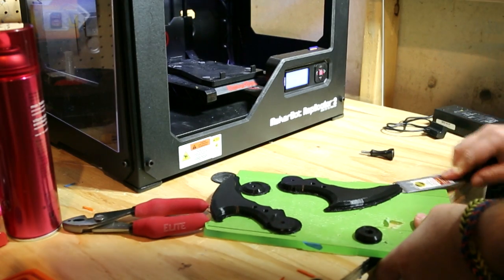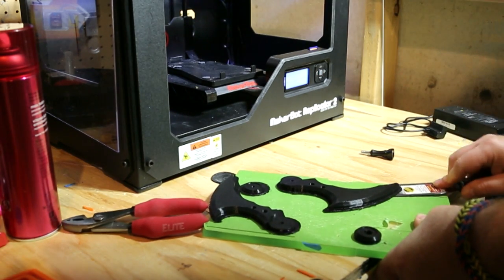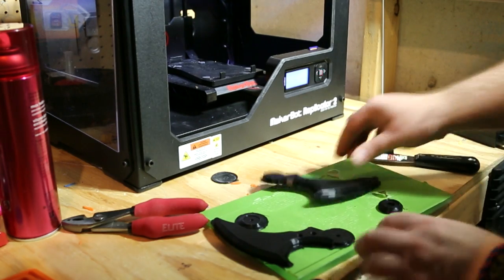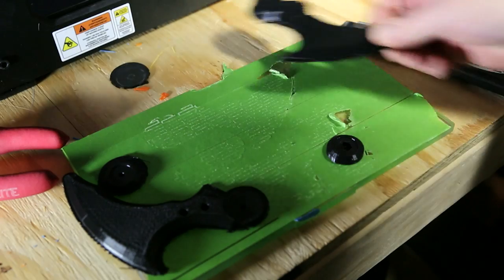Once the build is finished, we can take it off the build plate. Oftentimes, it'll just come right up, but sometimes you need to use a putty knife to give it a little extra reason to come loose.